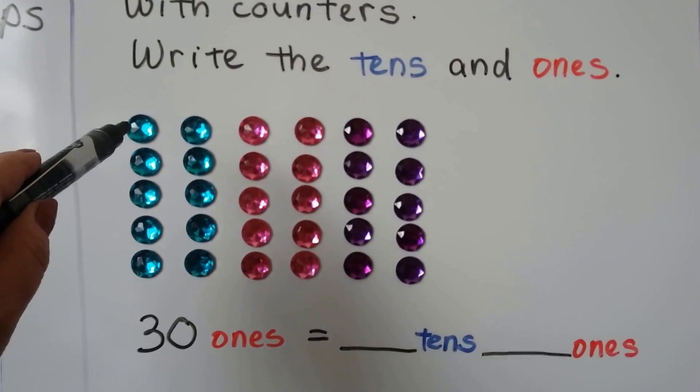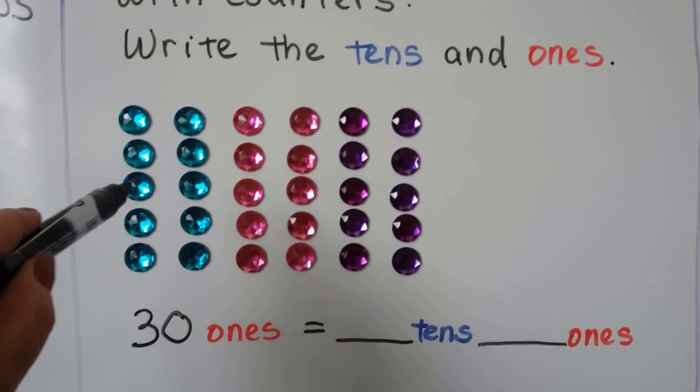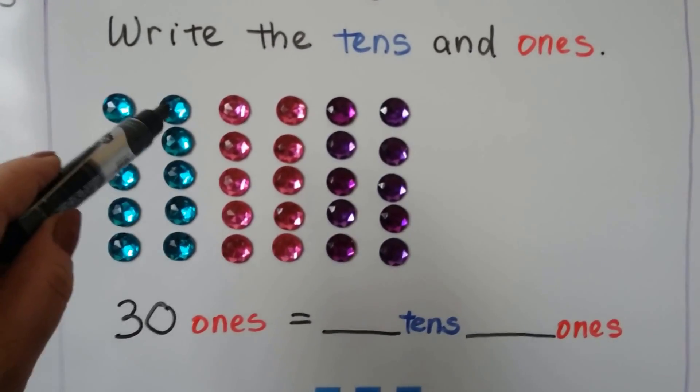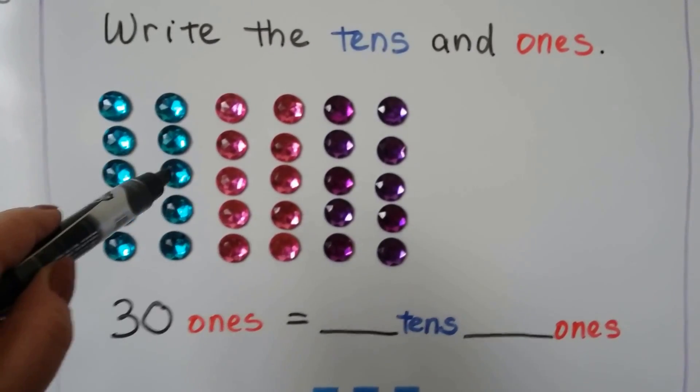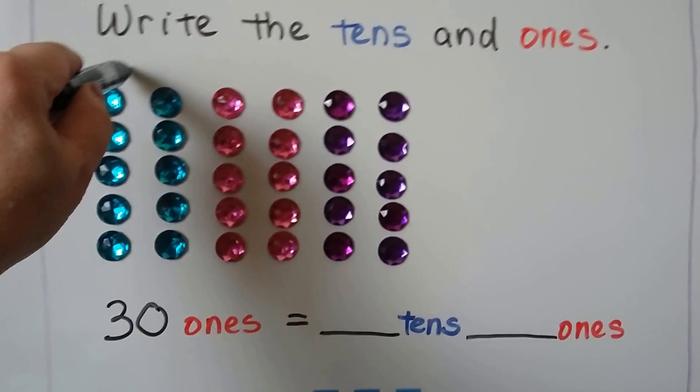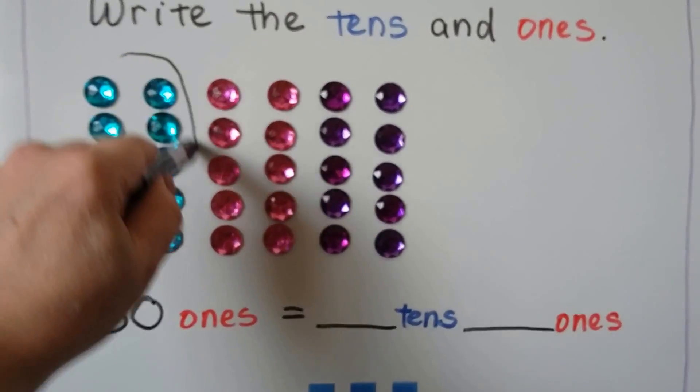We count one, two, three, four, five, six, seven, eight, nine, ten. That's one group.